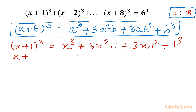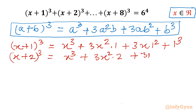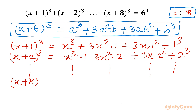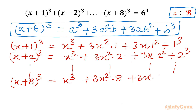Similarly, (x+2)³ = x³ + 3x²·2 + 3x·2² + 2³. We can similarly expand all terms up to (x+8)³ = x³ + 3x²·8 + 3x·8² + 8³.